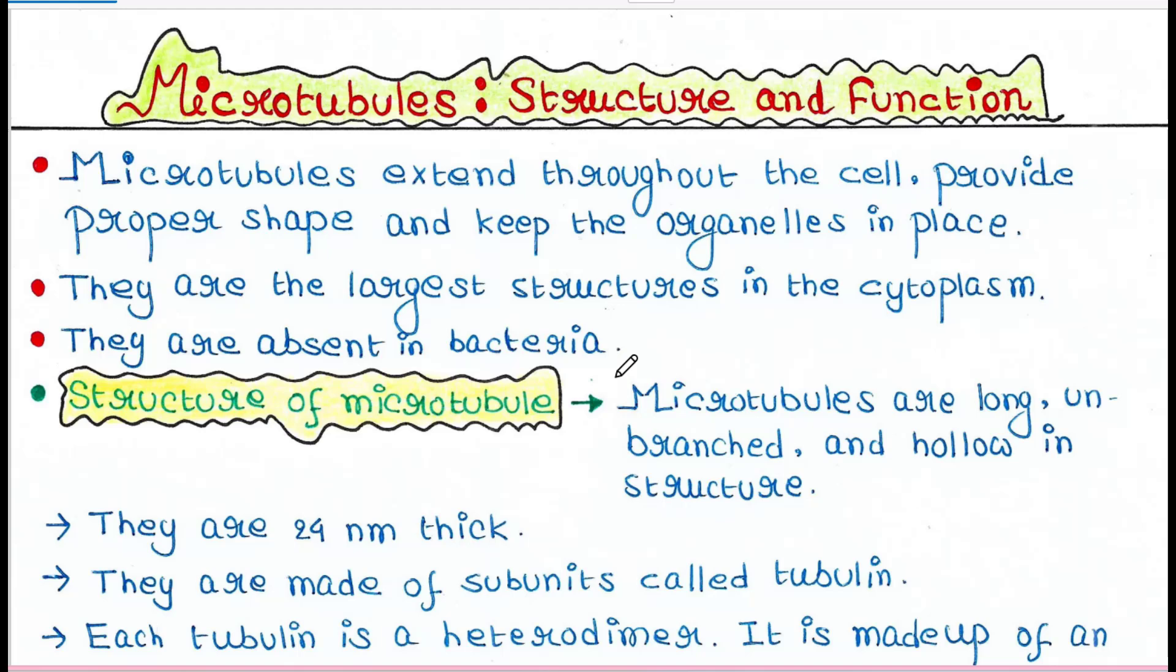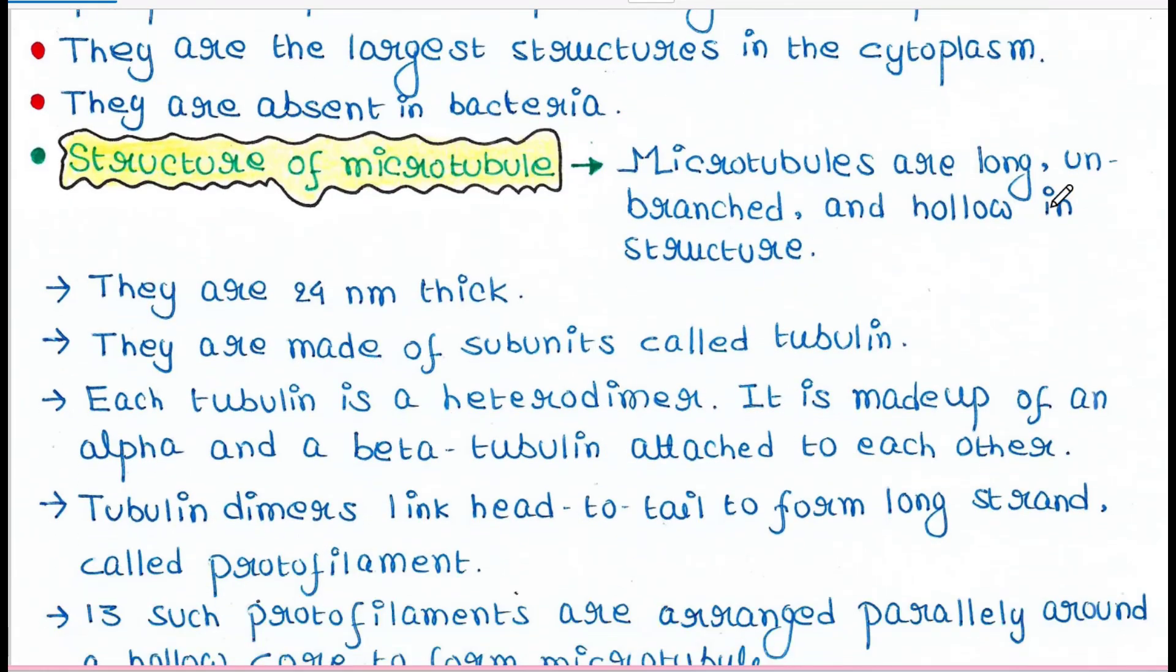Let's talk about the structure of microtubules. Microtubules are long, unbranched, and hollow in structure. They are 24 nanometers thick.